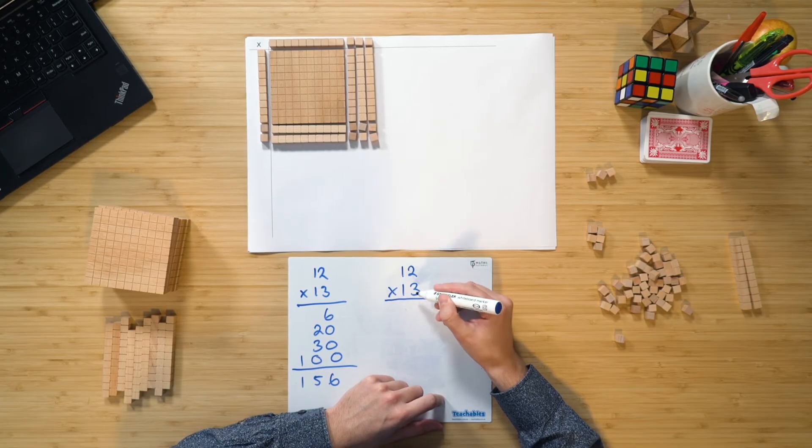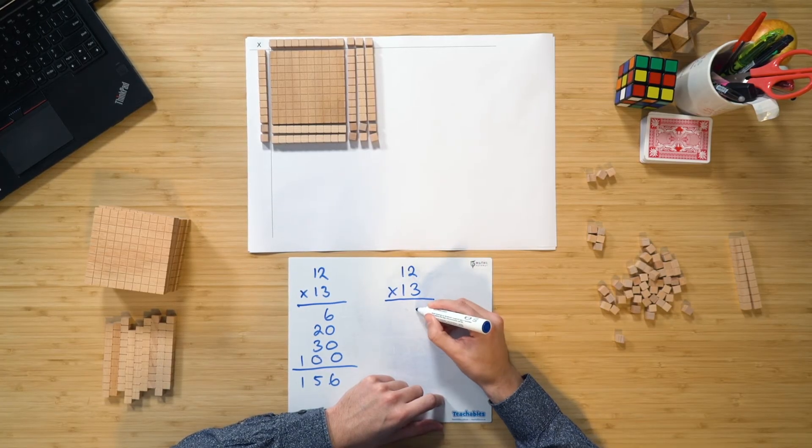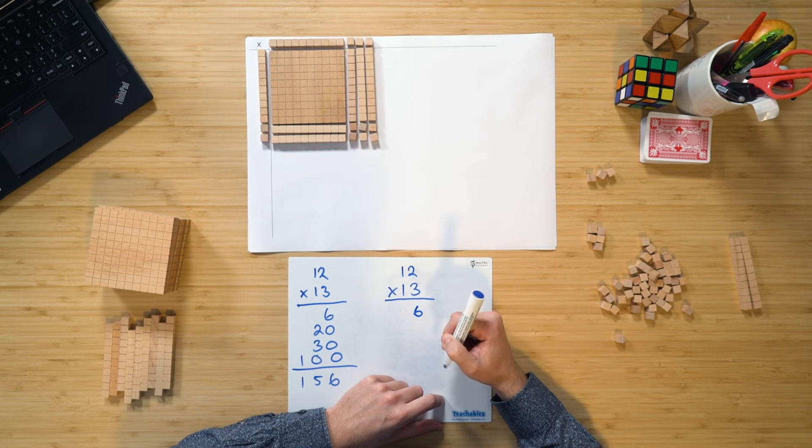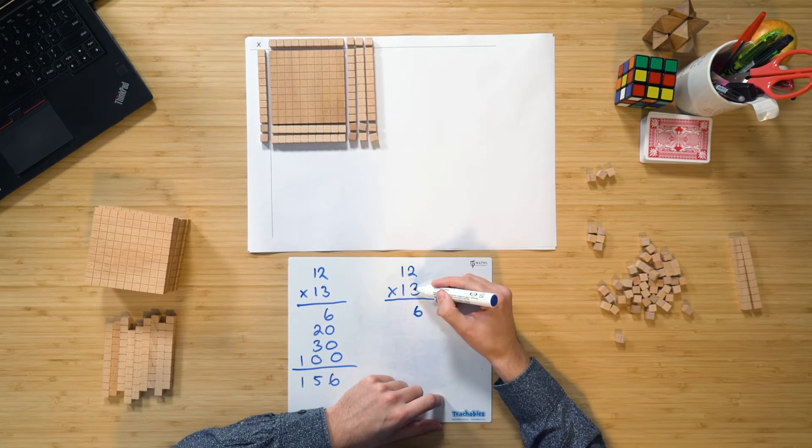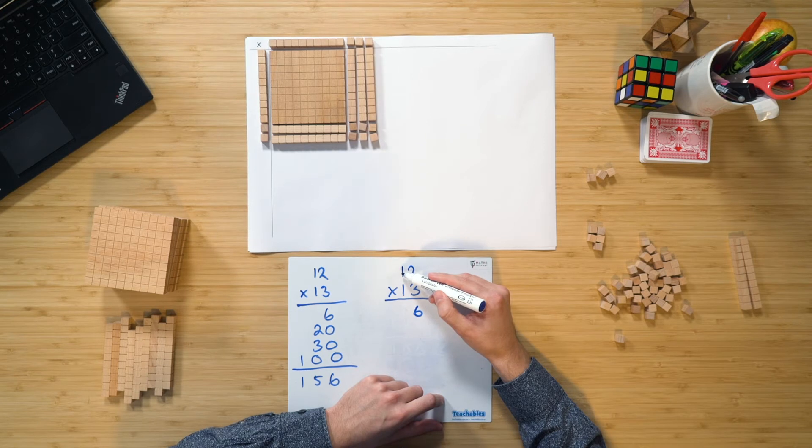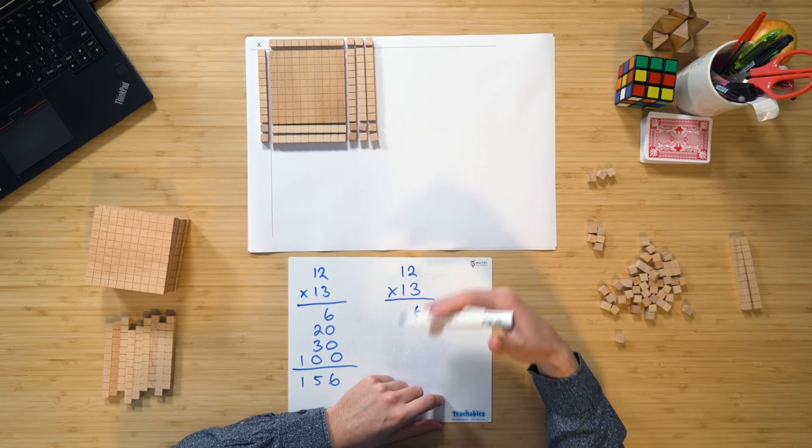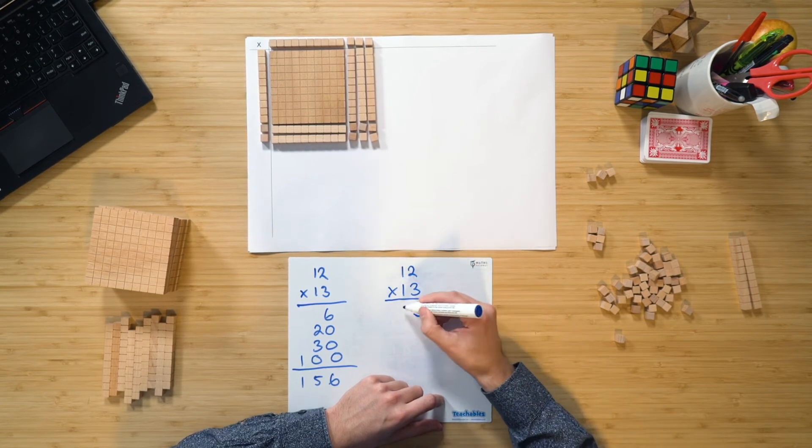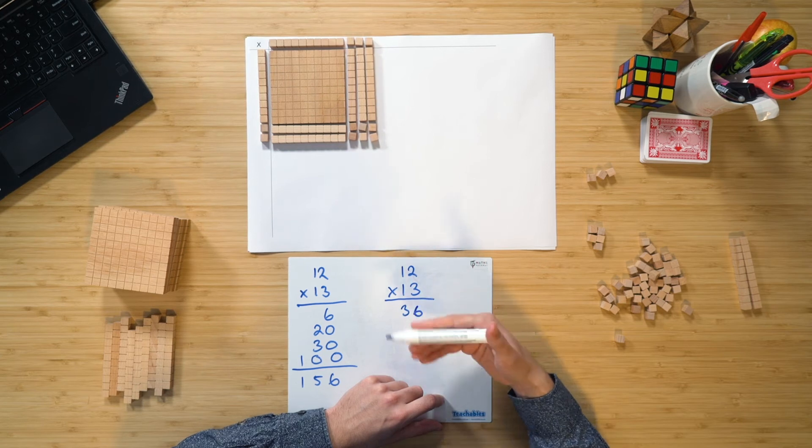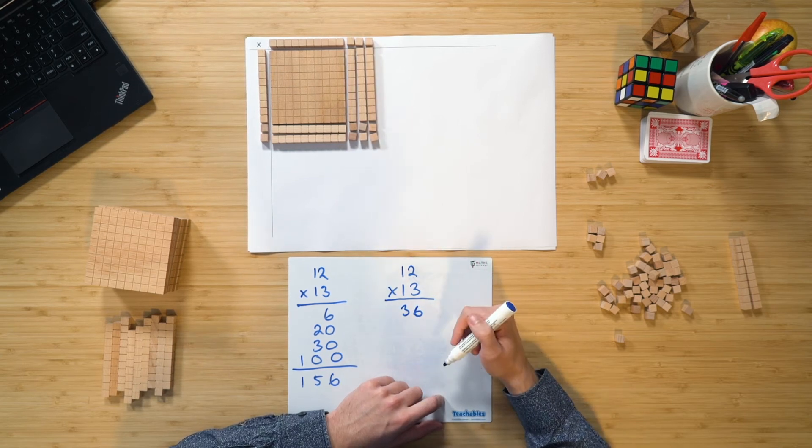We have 2 1s multiplied by 3 1s, which of course is going to be 6 1s. For this one, I'm going to have 3 1s multiplied by 1 10. So 3 multiplied by 1 10 would be 30. And of course, when I join the 30 and the 6 1s, I'm going to have 36.